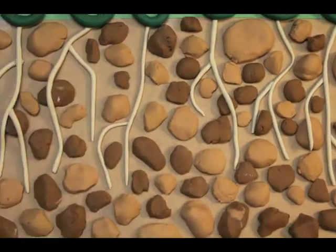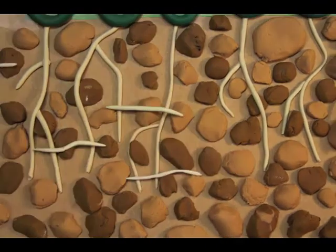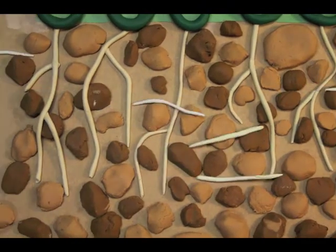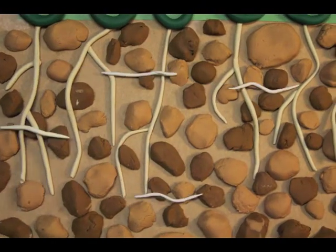A swarm of microscopic nematode worms swims through the soil toward it. Nematodes are plentiful in soil, and most are no threat to a grub. Most, but not all.